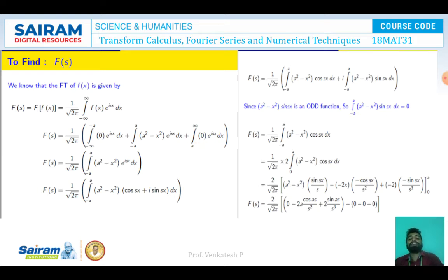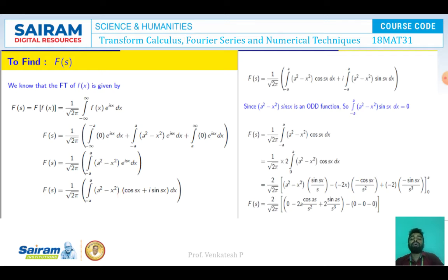The first and third integrals are zero, so we get F(s) = (1/√(2π)) ∫_{-a}^{+a} (a² - x²) e^{isx} dx. Expanding e^{isx} as cos(sx) + i sin(sx), we get F(s) = (1/√(2π)) ∫_{-a}^{+a} (a² - x²)(cos(sx) + i sin(sx)) dx.